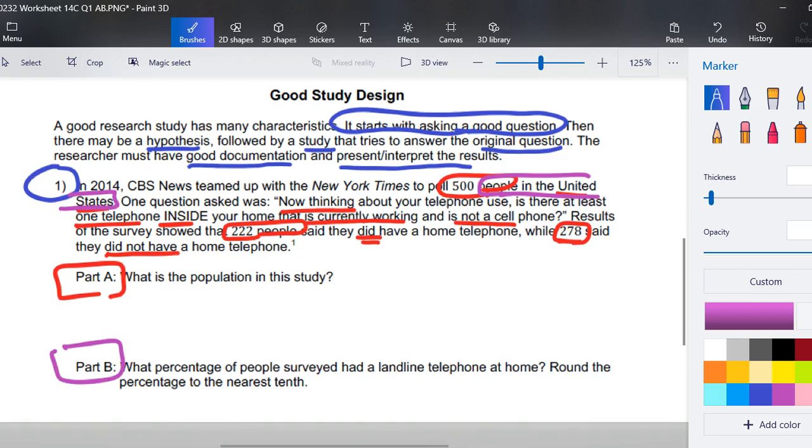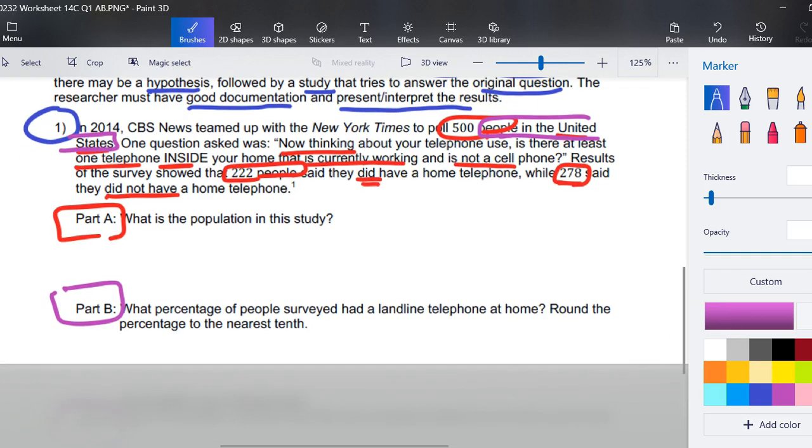Part B, what percentage of the people surveyed had a landline telephone at home? Round the percentage to the nearest tenth. So we want the percentage of the people who are surveyed who had a landline. The number of people who had a landline were 222 people out of the 500 who were surveyed. So as I grab a calculator, I'll punch 222 divided by 500. Since they're asking for a percentage, I will multiply times a hundred. So we are looking at 44.4 percent.